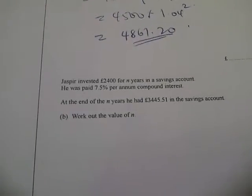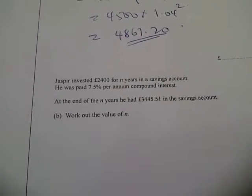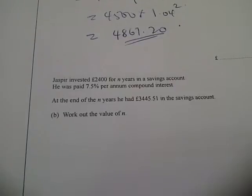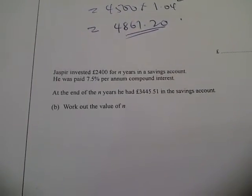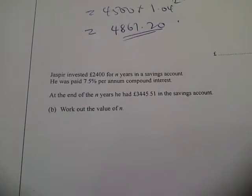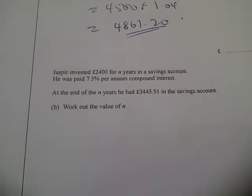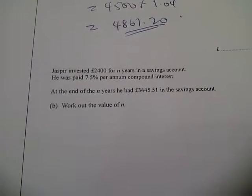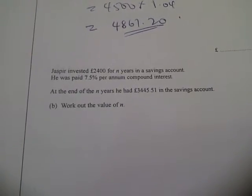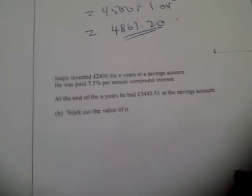Question 19b: Jasper invested £2,400 for n years in a savings account. He was paid 7.5% per annum compound interest. At the end of n years he had £3,445.51 in his savings account. Work out the value of n.